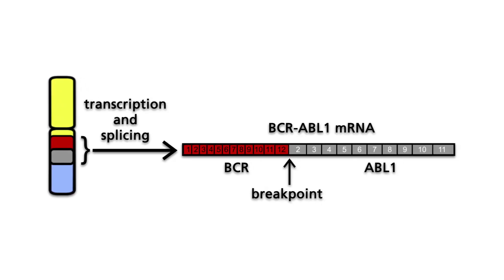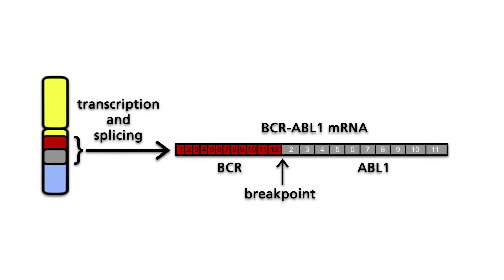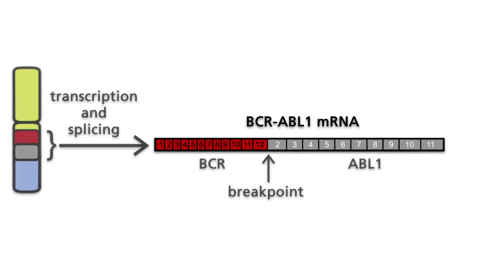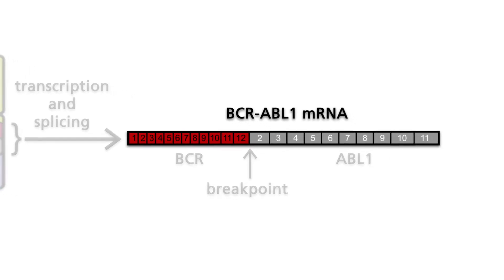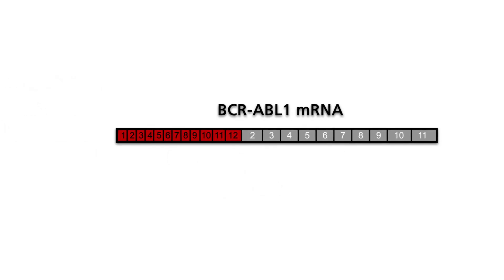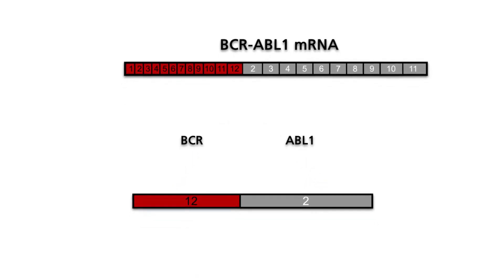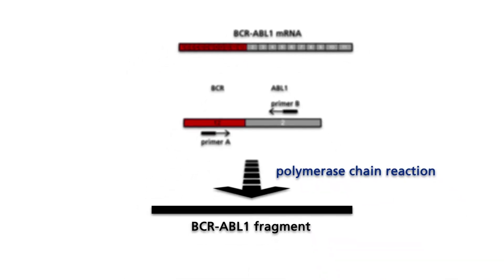In the leukemic cells of CML patients, exon 12 of the BCR gene is fused to exon 2 of the ABL1 gene. The typical BCR-ABL transcript allows sensitive detection of leukemic cells on the molecular level. The first step of this analysis is the amplification of a sequence fragment between exon 12 of BCR and exon 2 of ABL, which spans the breakpoint via a polymerase chain reaction.